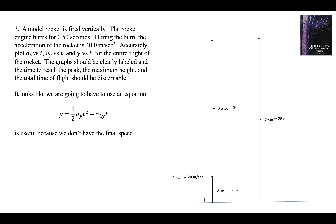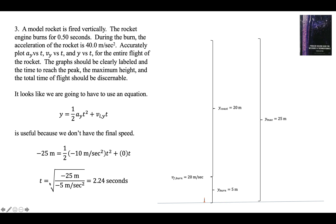We use a kinematic equation that doesn't include final speed, since we don't know the impact speed. Plugging in: the rocket falls 25 meters, acceleration is minus 10 meters per second squared, initial speed is zero (this is only the downward flight). So: minus 25 equals one-half times minus 10 times t squared. That gives minus 5t squared equals minus 25, so t squared equals 5, and t equals the square root of 5, which is 2.24 seconds. The downward coast takes 2.24 seconds.